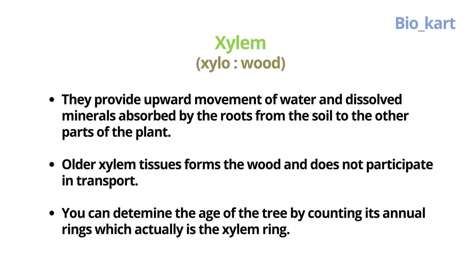When these xylem tissues get older, they form wood and further they don't participate in transportation. You can also determine the age of a tree by counting its annual rings, which are formed by the xylem rings.